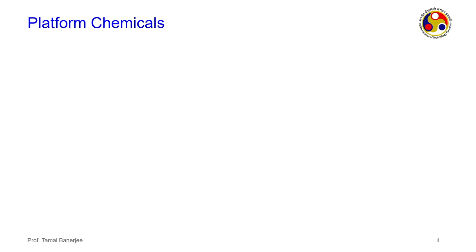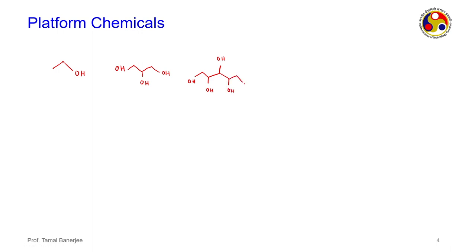The platform chemicals include: ethanol, glycerol (with OH groups on both sides and a central OH), xylitol (a very important compound with multiple OH groups), and sorbitol (another compound found in humans). These are all platform chemicals.